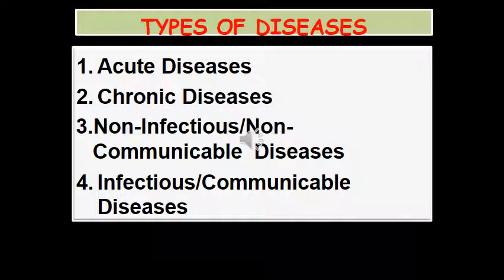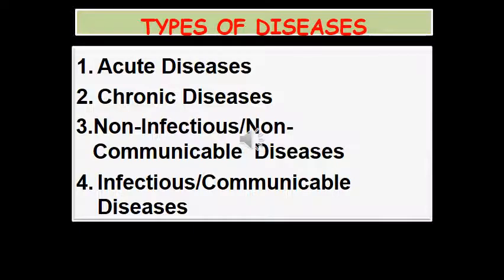Now let us look into the next topic: types of diseases. First is acute diseases, second is chronic diseases, third is non-infectious or non-communicable diseases, and the fourth is infectious or communicable diseases. Regarding non-infectious and infectious diseases, you have learnt in your 8th standard, but we will be discussing it in an elaborate way.